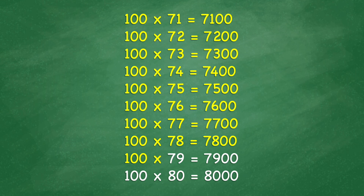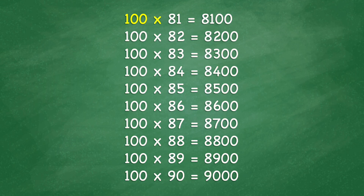100 times 79 equals 7,900. 100 times 80 equals 8,000. 100 times 81 equals 8,100. 100 times 82 equals 8,200. 100 times 83 equals 8,300. 100 times 84 equals 8,400. 100 times 85 equals 8,500. 100 times 86 equals 8,600.